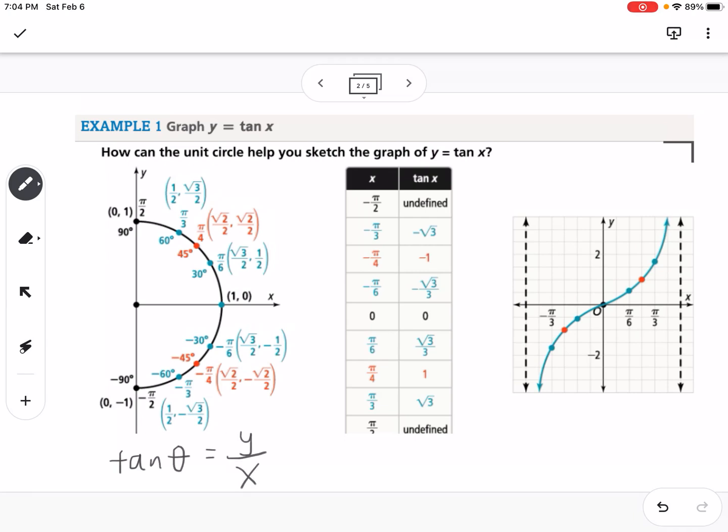So here's a table of values for our tangent. So if we have negative pi over 2, here's our y, here's our x, so 1 over 0 will be undefined. Then we go to negative pi over 3.